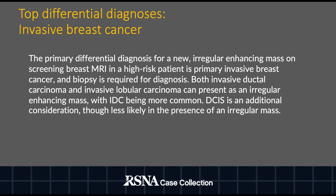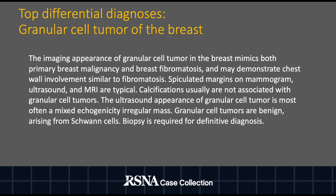The primary diagnostic consideration for a new enhancing breast mass on screening MRI in a high-risk patient is primary invasive breast cancer. Granular cell tumors of the breast can mimic both primary breast cancer and breast fibromatosis. These tumors are benign and arise from Schwann cells.